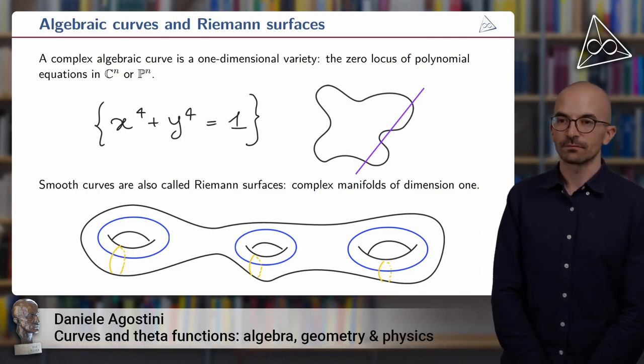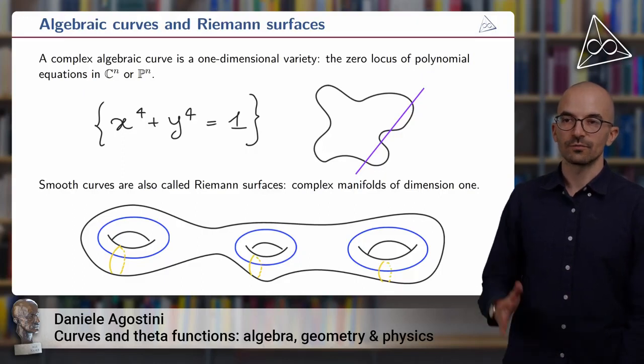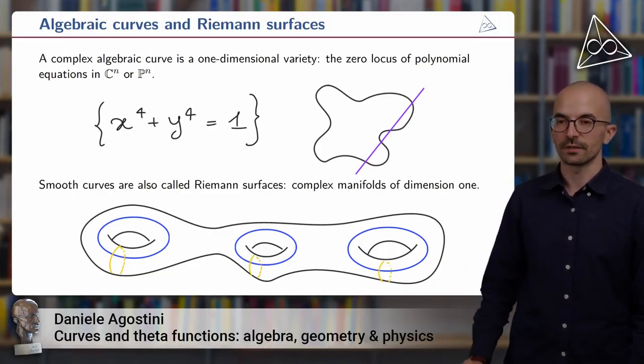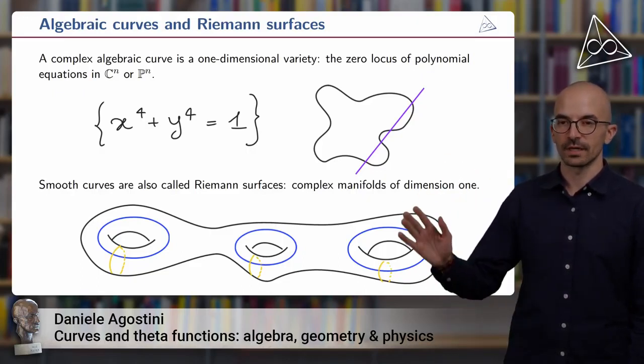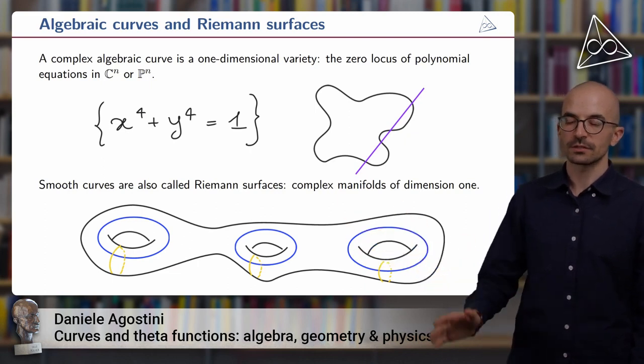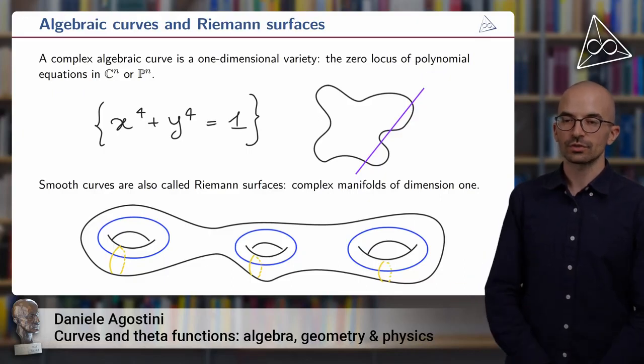So they are one-dimensional varieties, the zero loci of polynomial equations inside the affine space C^n or inside the projective space P^n. One example is given by this illustration. On one side you see the algebraic aspect, which is in this case a quartic equation in two variables, and on the other side you see the geometric picture.